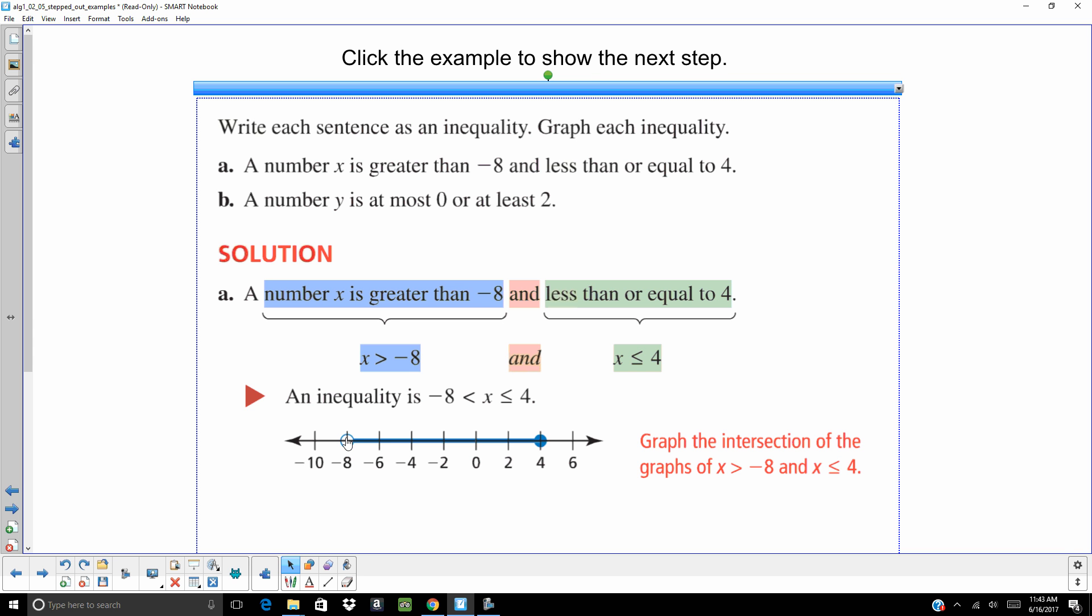The way you would graph that is you need to have an open circle at negative 8 and a closed one at 4. And if you were to graph each of those individually, it would overlap in this section. And that is our solution.